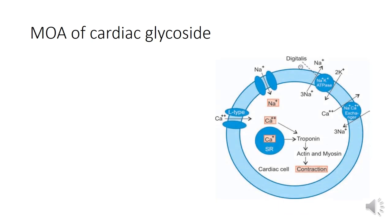This is the diagram. First we will see how ion regulation normally occurs in the cardiac cell. This is the calcium channel and this is the sodium channel. Normally, calcium enters into the cardiac cell through the calcium channel, and sodium enters via the sodium channel. The regulation of these sodium and calcium ions in the cardiac cell occurs through the sodium-potassium ATPase pump. Normally, sodium goes out and in response, potassium comes inside.